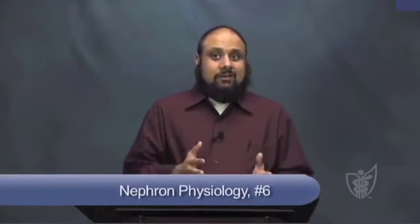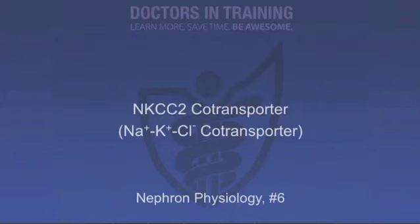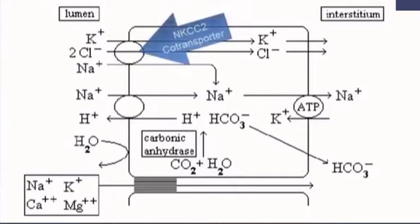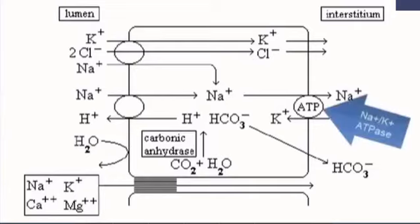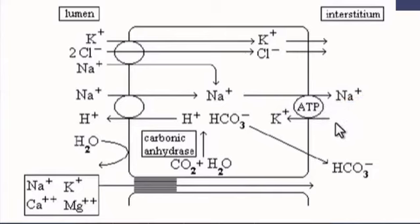We're going to concentrate on the NKCC2 co-transporter, the primary co-transporter in the thick ascending limb. It transports two cations — sodium and potassium — and two chloride ions across the membrane, remaining completely electrically neutral. The sodium-potassium ATPase on the interstitial membrane drives sodium into the interstitium and potassium back into the cell, increasing the electrical potential of the urine.